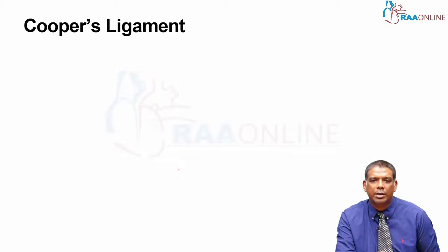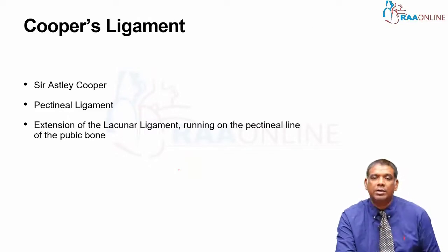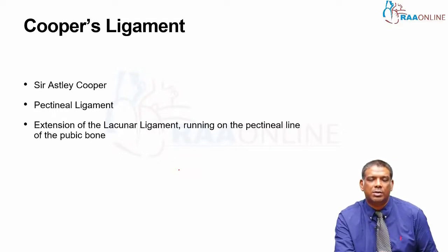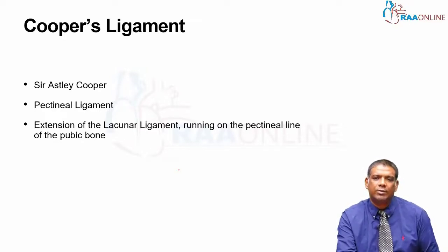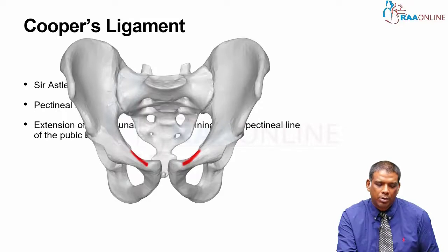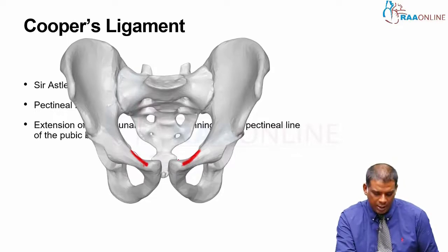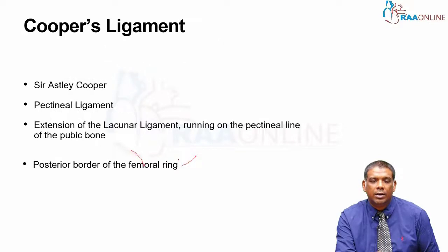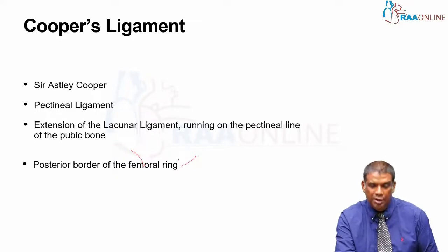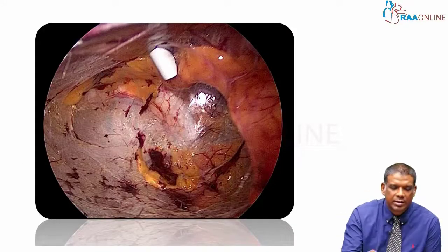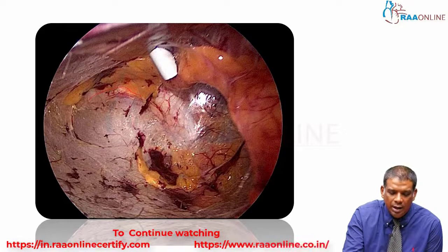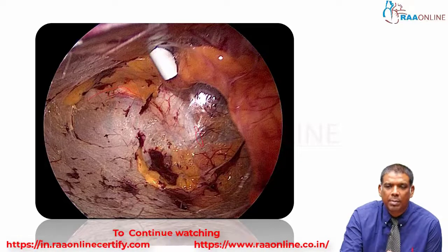Cooper's ligament is naturally named after Sir Ashley Cooper, from the same year as his famous aphorism in 1804. It is also known as the pectineal ligament, and it is essentially an extension of the lacunar ligament running on the pectineal line of the pubic bone. This is where you will find the pectineal ligament — and this is a very important point — it forms the posterior border of the femoral ring. The lateral-most aspect of the pubic bone is where you will identify the pectineal ligament.